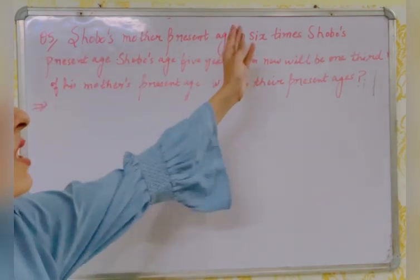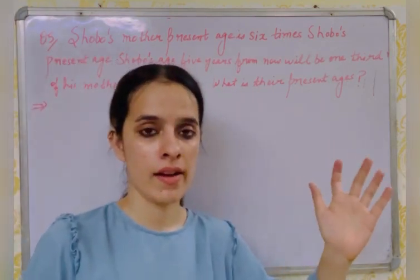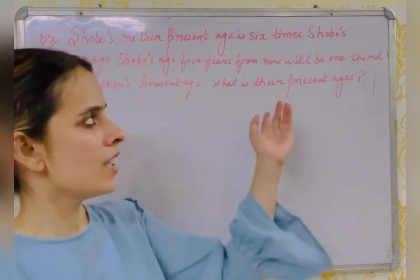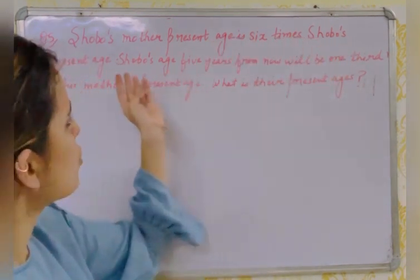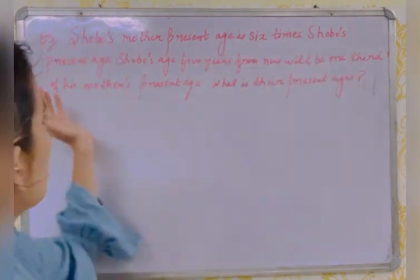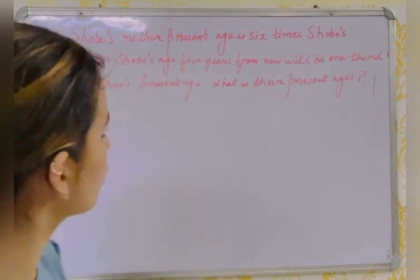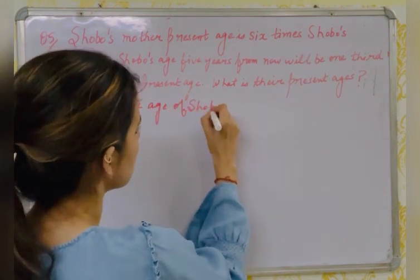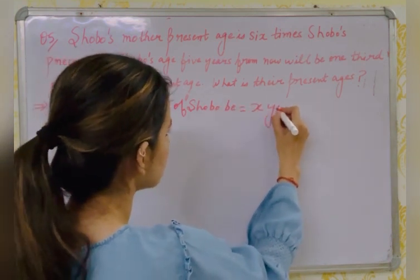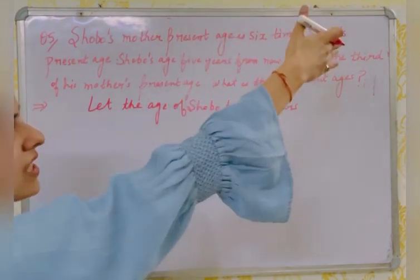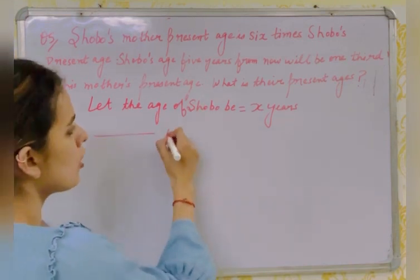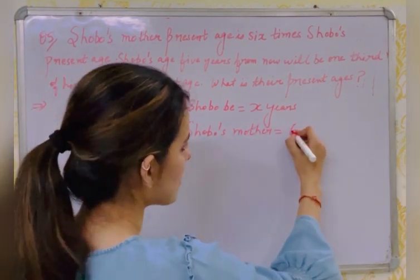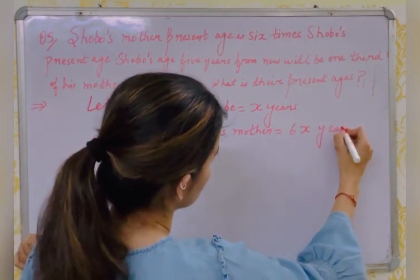Question 5: Shubu's mother's present age is 6 times Shubu's present age. Shubu's age 5 years from now will be one-third of his mother's present age. What are their present ages? Let the age of Shubu be x years. Then Shubu's mother's present age is 6x years.